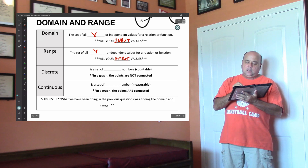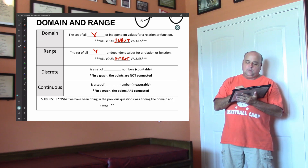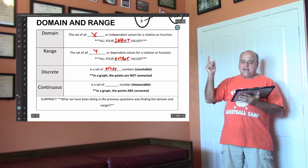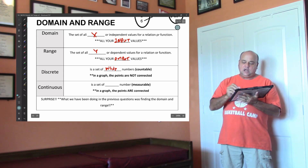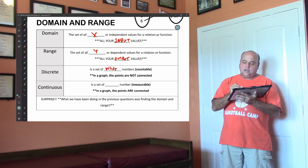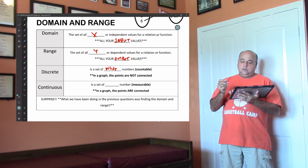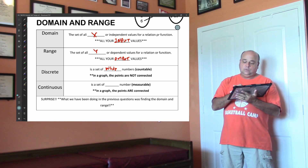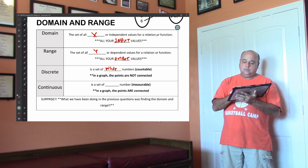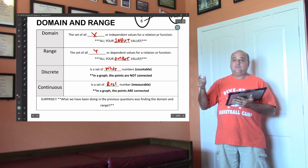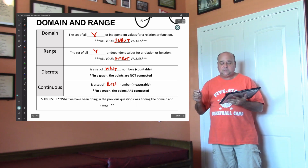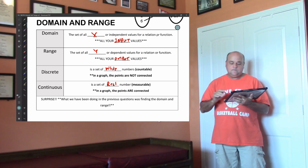Discrete is a set of whole numbers — it's countable. Continuous is a set of real numbers. This would have fractions and decimals in it.